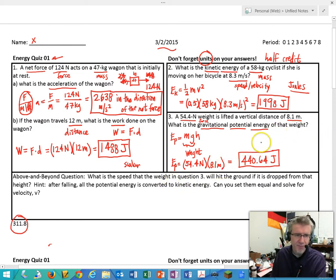Here's the above and beyond question. What is the speed of a weight has in question three if it is dropped from that height? So here's what my hint was about. I've got gravitational potential energy which, if something is up here and it falls off a table, it has potential energy up here. As it falls, that potential energy is converted to kinetic energy, so down here it has kinetic energy.